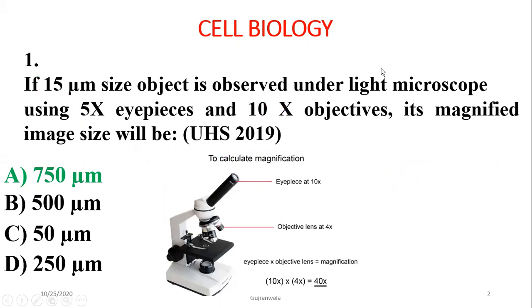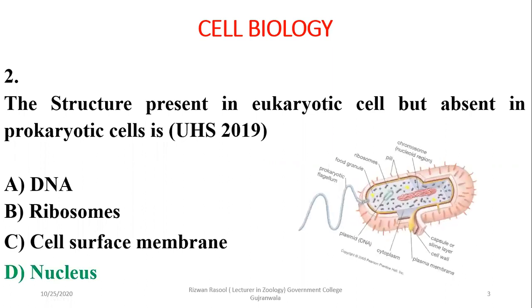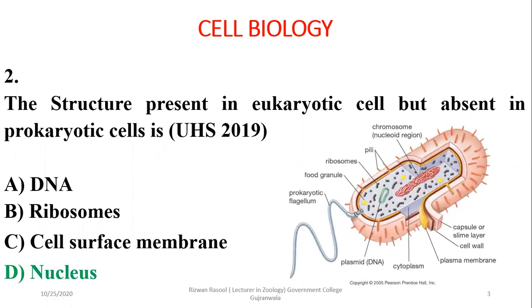Question 2: The structure present in eukaryotic cells but absent in prokaryotic cells is definitely the nucleus, as prokaryotes do not have a proper nucleus — their nuclear material is dispersed in the cytoplasm.